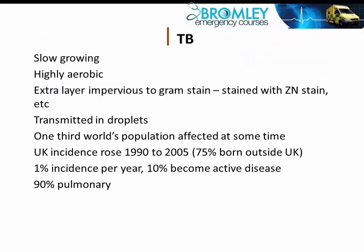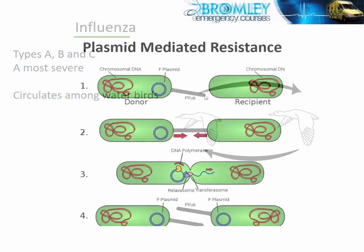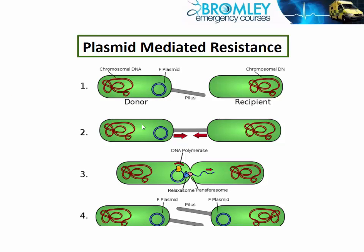Just first of all about the bacteria itself — TB is a very slow growing bacteria, whereas many bacteria multiply in about 20 minutes. It's good to understand a bit about influenza because it helps to make sense of the vaccination and of the whole issue about epidemics.